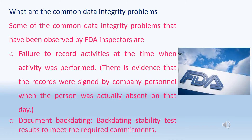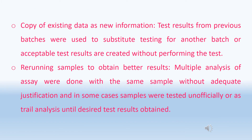What are the common data integrity problems? Some common data integrity problems observed by FDA inspectors are: failure to record activities at the time when the activity was performed, document backdating, copying existing data as new information, and rerunning samples to obtain better results.